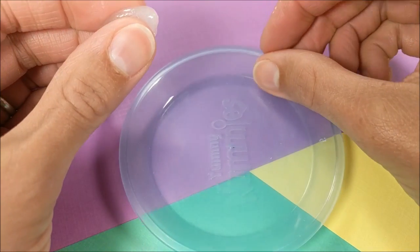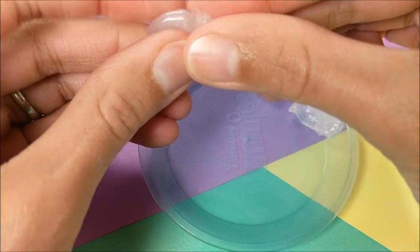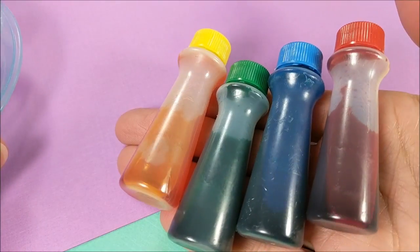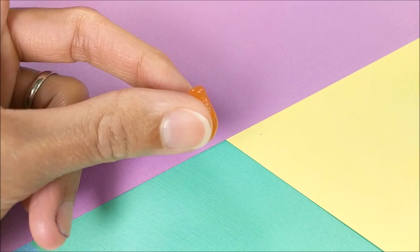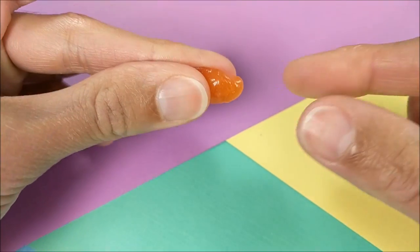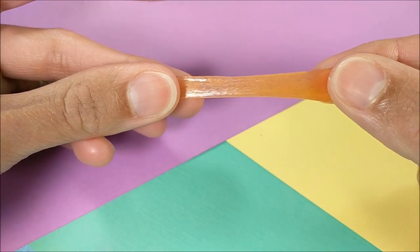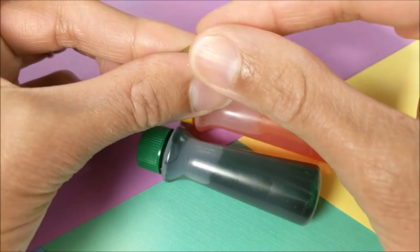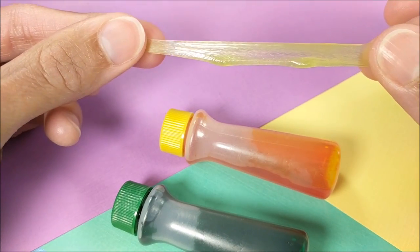And when it's no longer sticky, I divide it into four sections and use food coloring to make my soda. For my Fanta, or my orange, I mix yellow and red. And for my Mountain Dew, green and yellow.